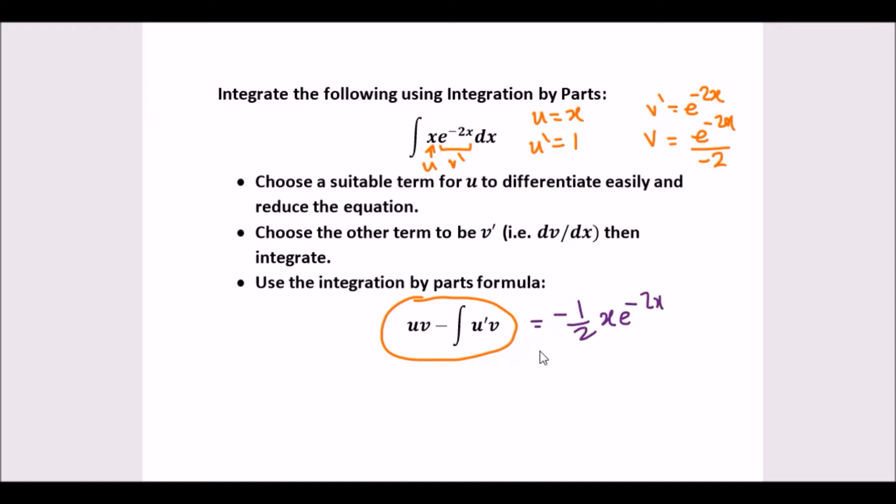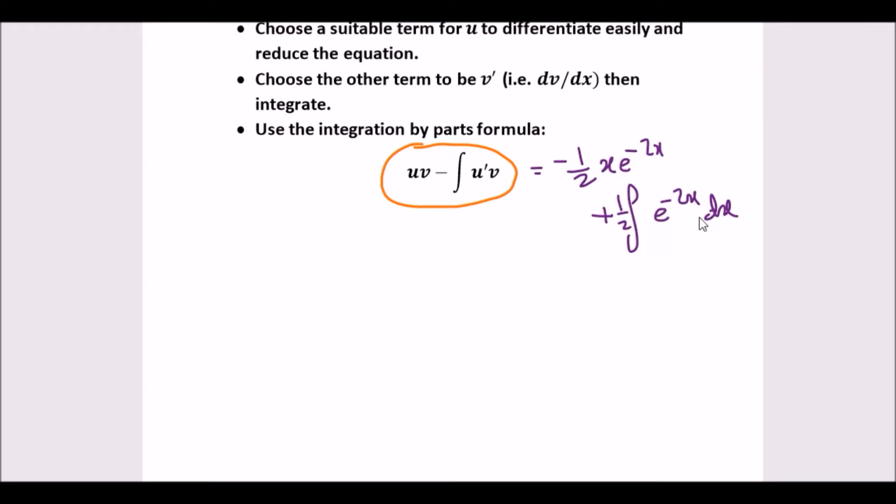So u prime is 1 times v, which is just going to be the same thing, but taking this negative outside would be plus half, and then e to negative 2x dx. Not so bad, is it? Just integrating this last term and we're done.